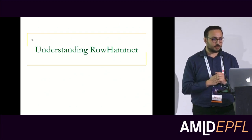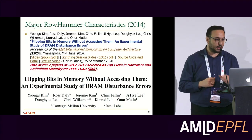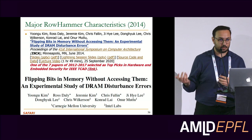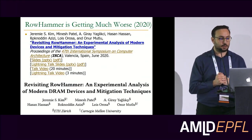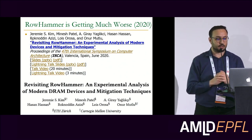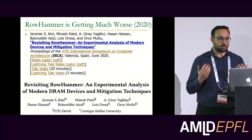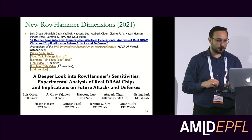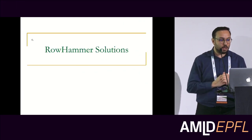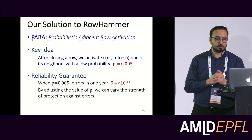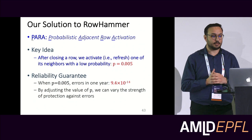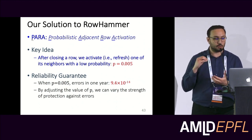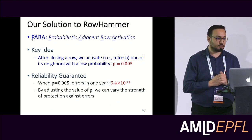The first topic is understanding Rowhammer. I'll mention a few papers. The first is the 2014 paper I already mentioned. In 2020, we published another paper where we revisit the DRAM characterization study and show how Rowhammer is doing with new chips — it seems like it's getting much worse. In 2021, we also published a paper looking at different sensitivities of Rowhammer to understand it more thoroughly and comprehensively.